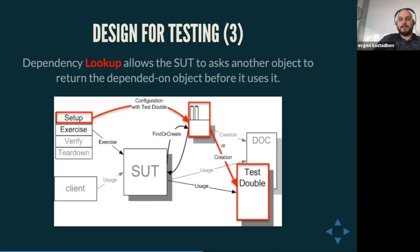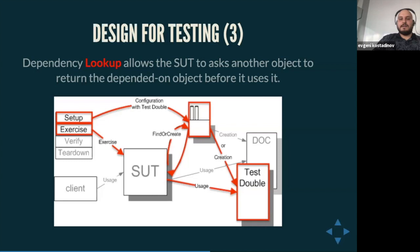Another solution is dependency lookup, which is a bit more complex. In most cases it involves a registry that allows the system under test to ask another object to return the dependency before using it. In our setup method, we configure test doubles by providing all dependencies as test objects. In the exercise phase, the system under test finds or creates the test double via the registry, and then uses the test double instead of the actual dependency. This is a more complex solution requiring a better design to use properly.